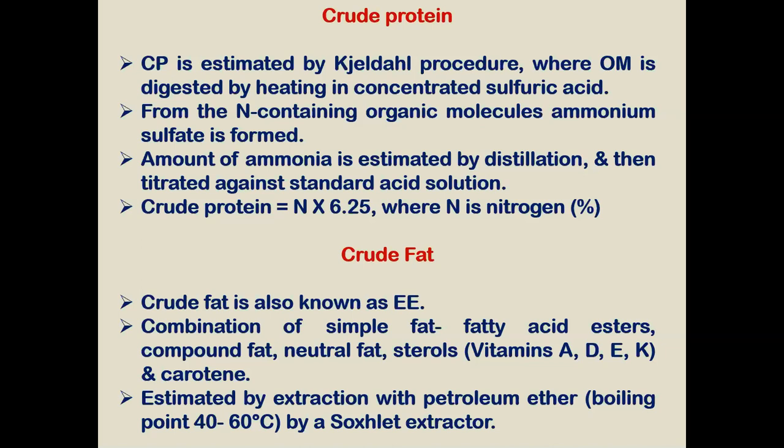After distillation, the ammonia is titrated against a standard acid solution of H₂SO₄. The crude protein content or crude protein percentage is calculated by multiplying the nitrogen content of the feed by 6.25 and expressing it as a percentage.